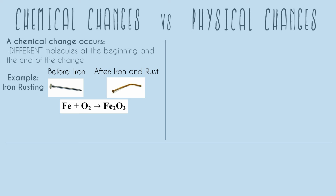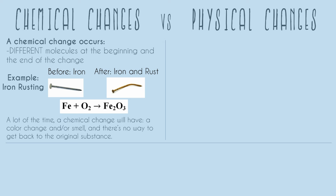Just one more thing that will help you tell the difference — and this isn't a hundred percent, but a lot of the time a chemical change will have a color change and/or a smell. And there's usually no way to get back to the original substance.